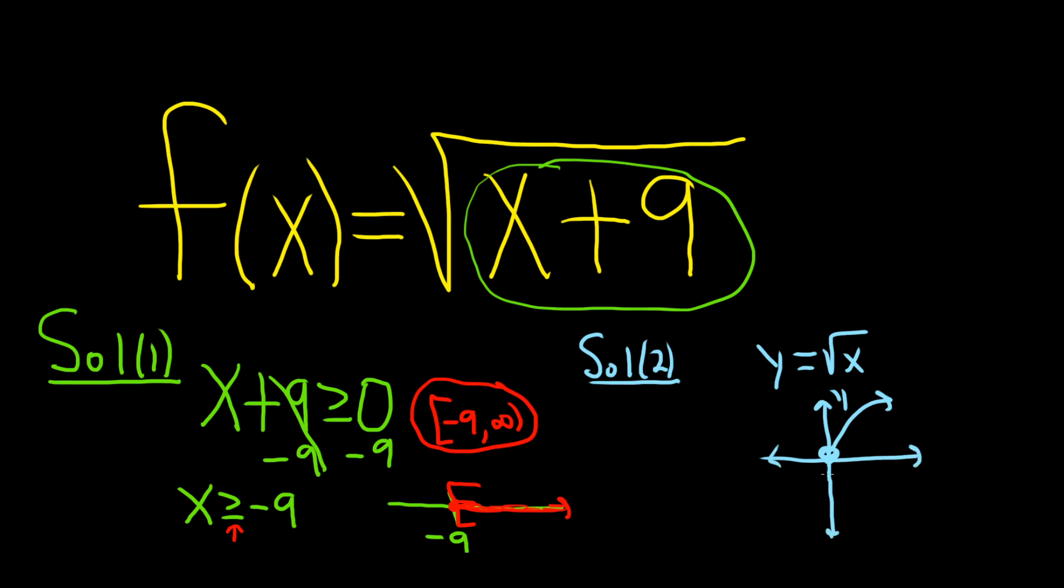So here we have the square root of x plus 9. So that means that we're going left 9. It's always backwards when you add to the x. So you take this graph that's down here and you shift it left 9.